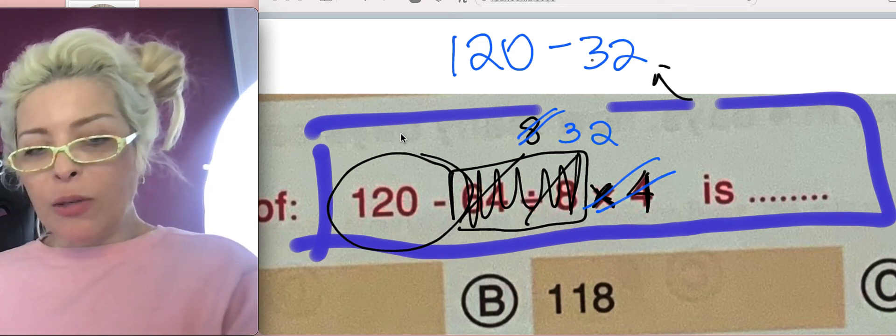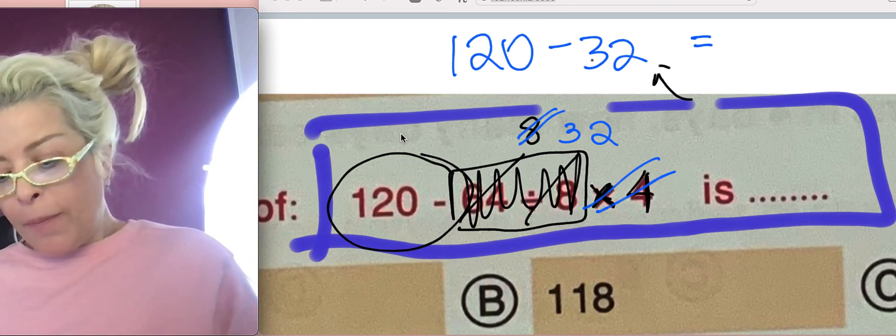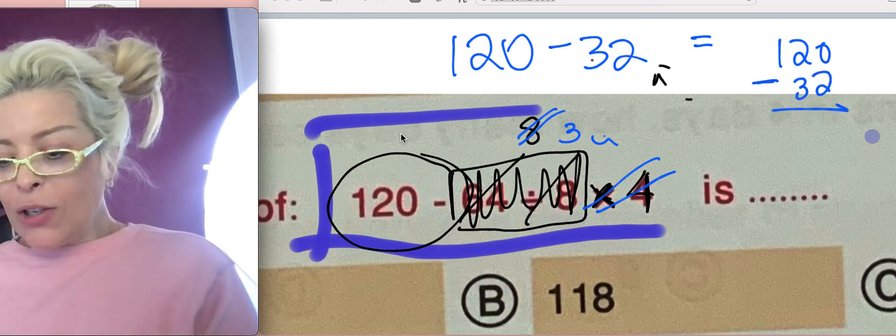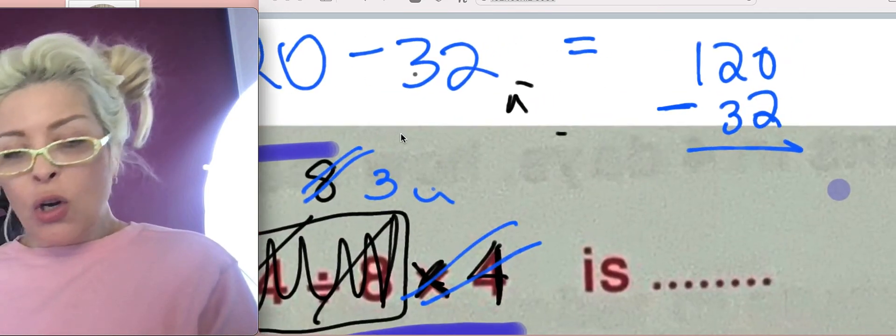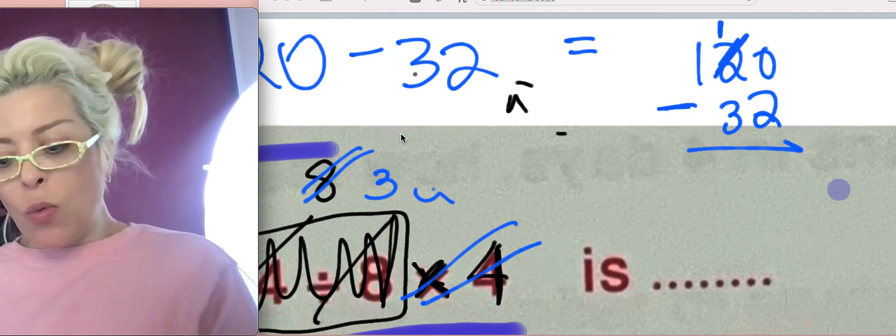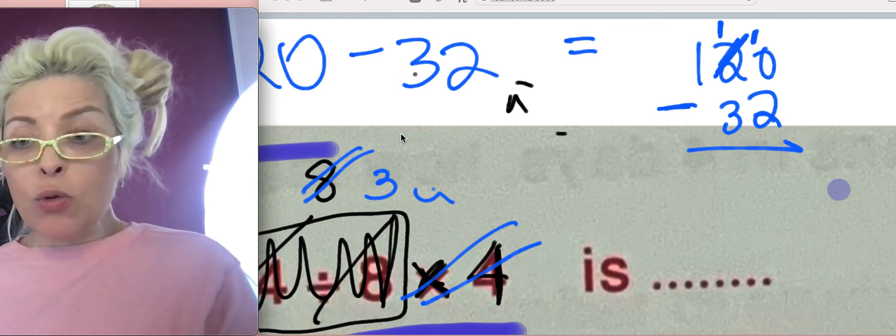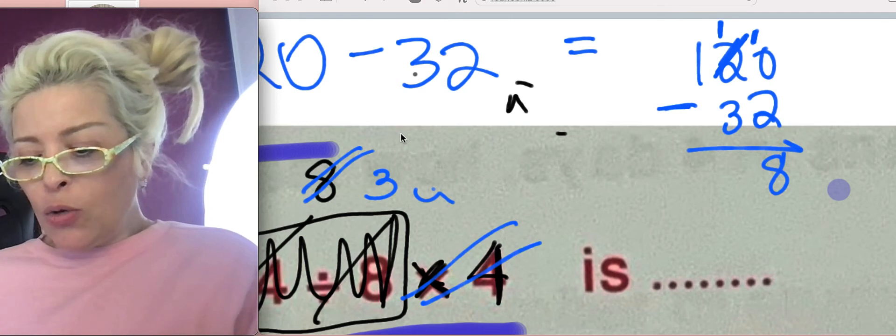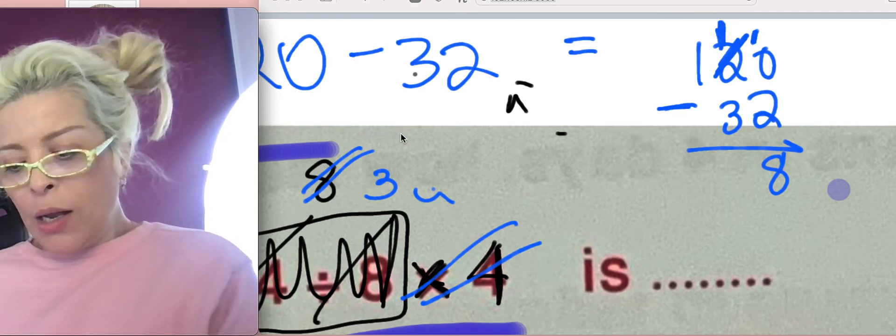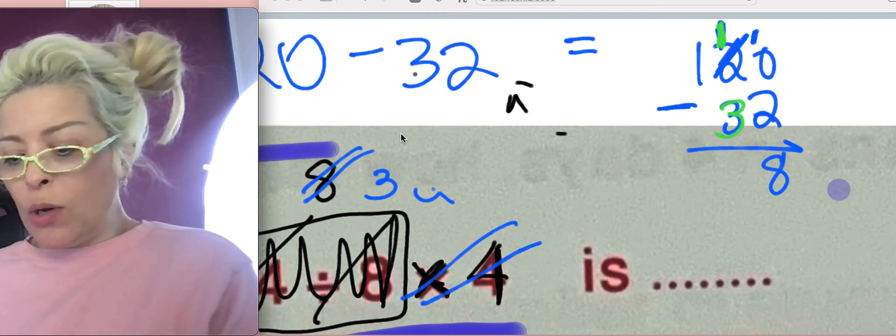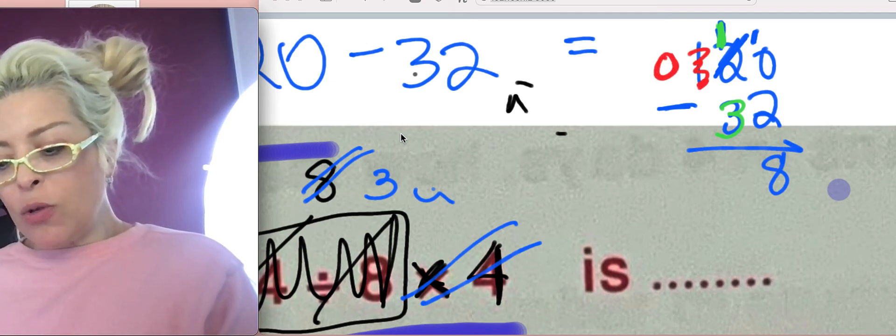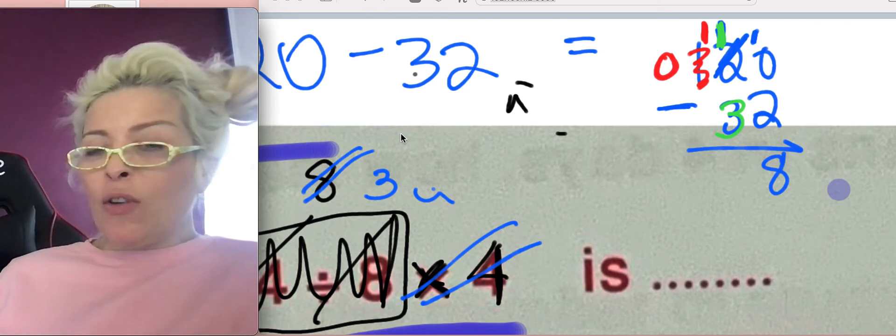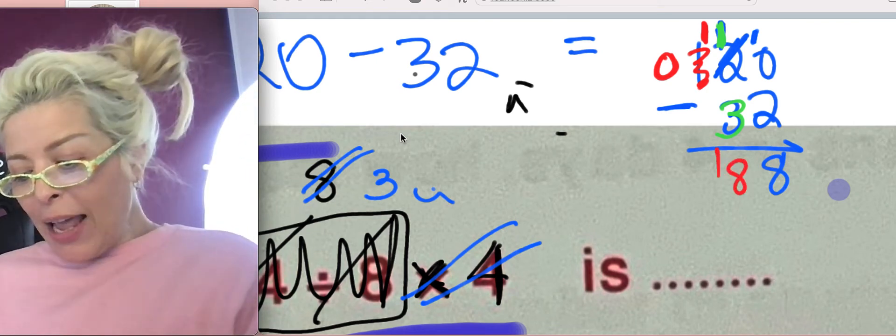120 minus 32. Some people are going to say, teacher, I don't know how to subtract on the side. No problem. I'm going to put the number 120 here and 32 here. How much is 0 minus 2? We can't do it. We have to borrow from the 2, turn this into a 1, and then turn this into a 10. Can we do 10 minus 2? Yes, we can. How far away is 2 from 10? 8. Now let's do the next one. 1 minus 3. We can't do it. We have to borrow from the 1, turn it into a 0, and turn the 1 into an 11. 11 minus 3 is how much? 8. And the answer is 88. We did it.